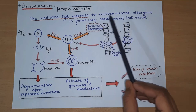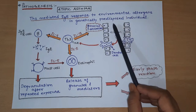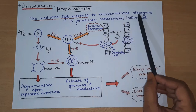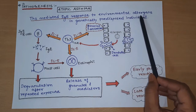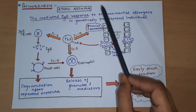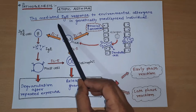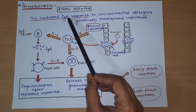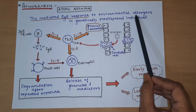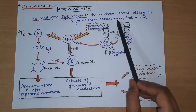In atopic asthma, genetic susceptibility is present in the individual; they are triggered by environmental allergens such as dust and pollen. It is a type 1 hypersensitivity reaction, which is IgE-mediated. So this is the one-line summary of the pathogenesis of atopic asthma.